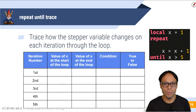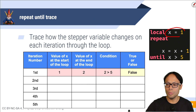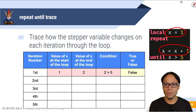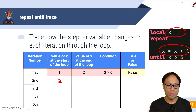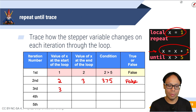Let's trace how the stepper variable changes on each iteration through the loop. We initially start with x equal to one. Inside the loop, x equals x plus one, so that becomes two. The condition at the very end of the loop would be two greater than five — that condition is false. At the start of the next iteration we have two, the end value is three, and three greater than five is also false. Next iteration: three plus one is four, and four greater than five is false.